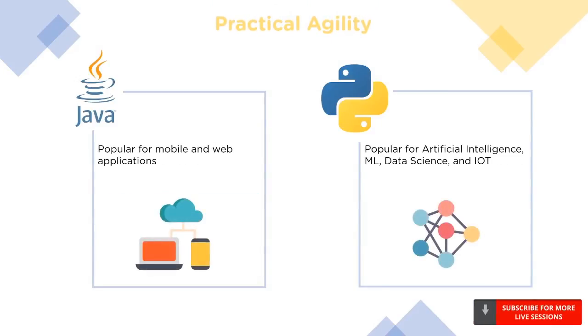Java is more commonly used for web and mobile applications, while Python is mainly used for data science, machine learning, and the Internet of Things.